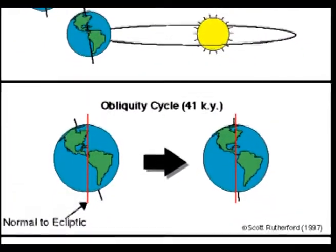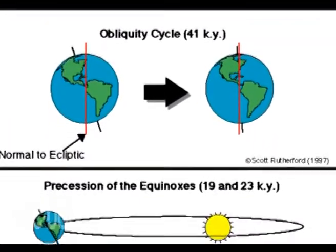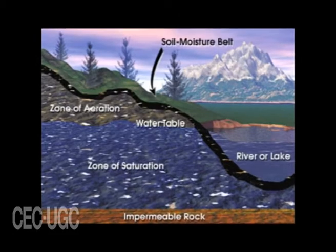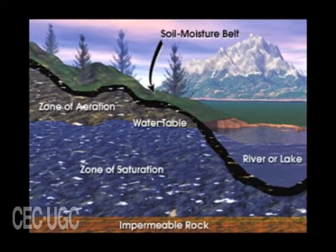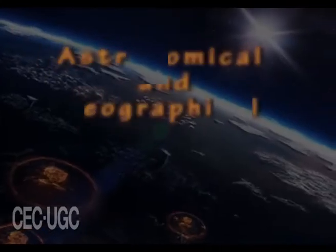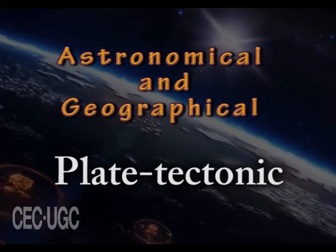Now let's come to the next point: causes of glaciation. The Pleistocene was an epoch of great climatic fluctuation. Those fluctuations occurred repeatedly at frequent intervals and produced dramatic changes in the deposition of water level. The exact reason behind this situation is not known, but attempts have been made to explain it. Two types of theories are found in these contexts: astronomical and geographical, i.e. plate tectonic.